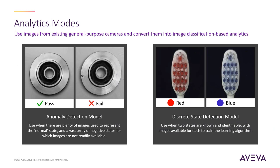This release of Vision AI Assistant provides two analytics modes: anomaly detection and discrete state detection. Anomaly detection is best used where you want to detect any deviation from a known good state, such as manufacturing defects or intruder detection. Discrete state detection is targeted for applications where there are two known states and you want the model to identify which one is presented, for example batch detection.